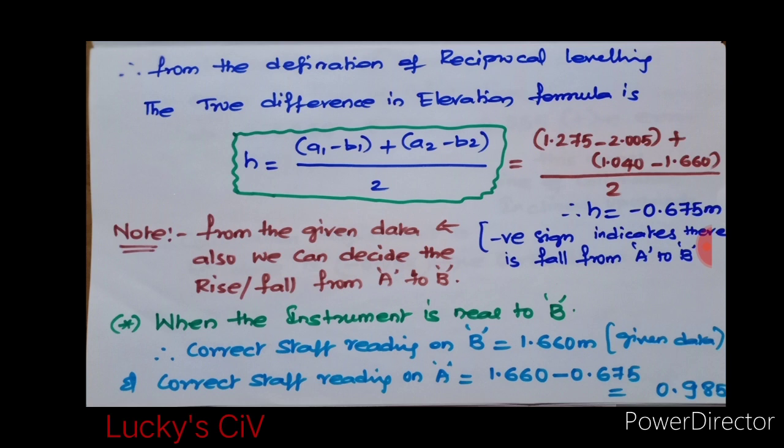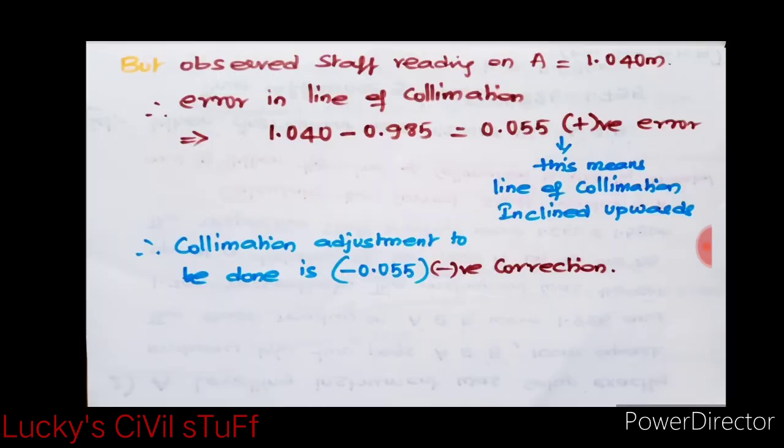When the instrument is near to B, the correct staff reading on B is 1.660 as per the given data, and the correct staff reading on A should be 1.660 minus 0.675, which is 0.985.